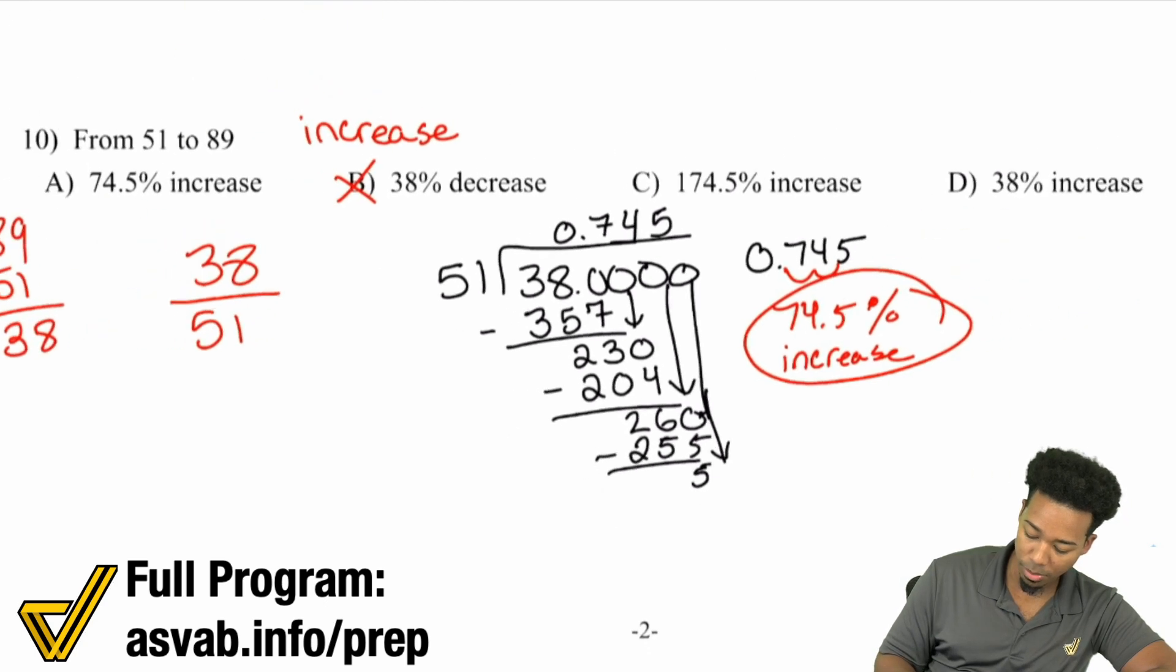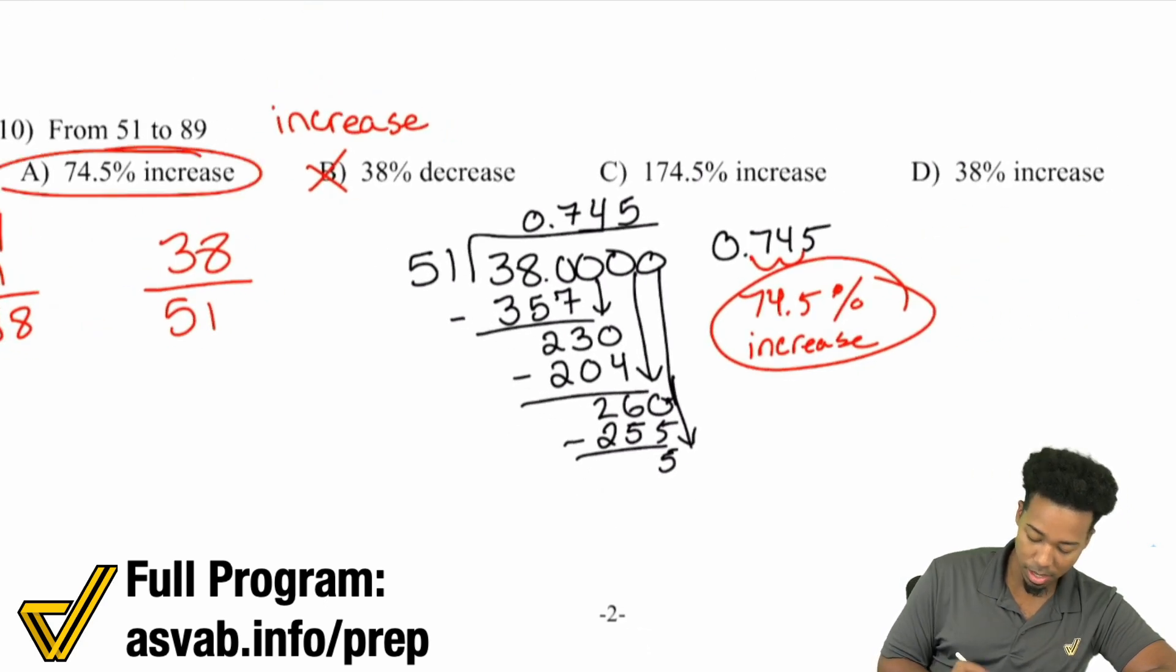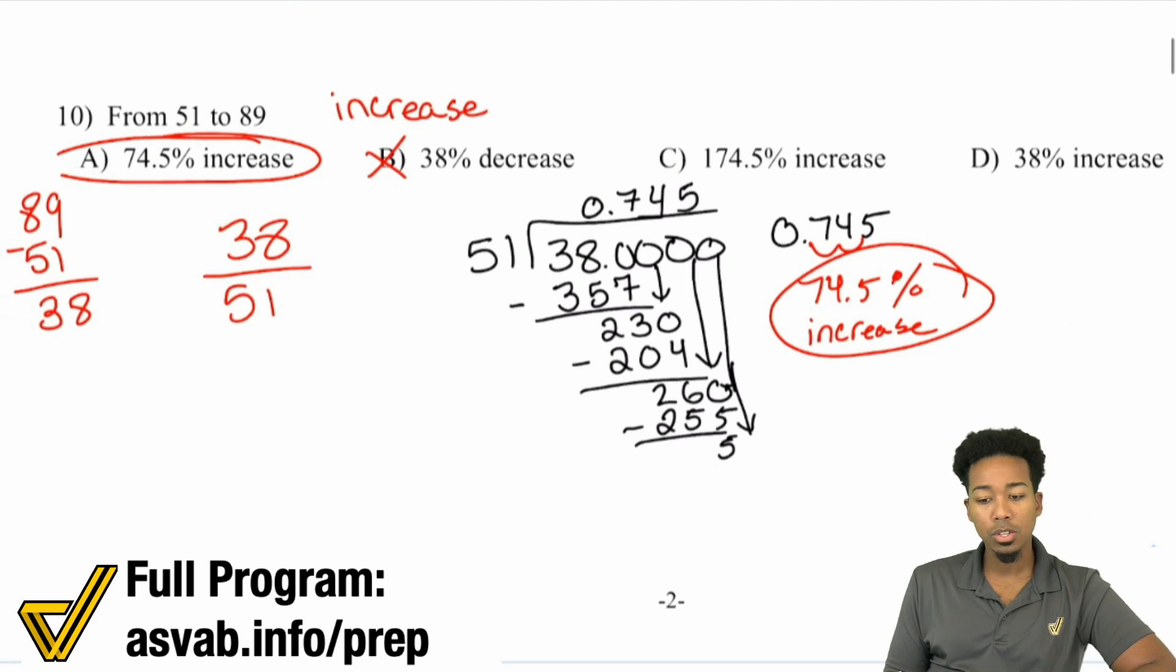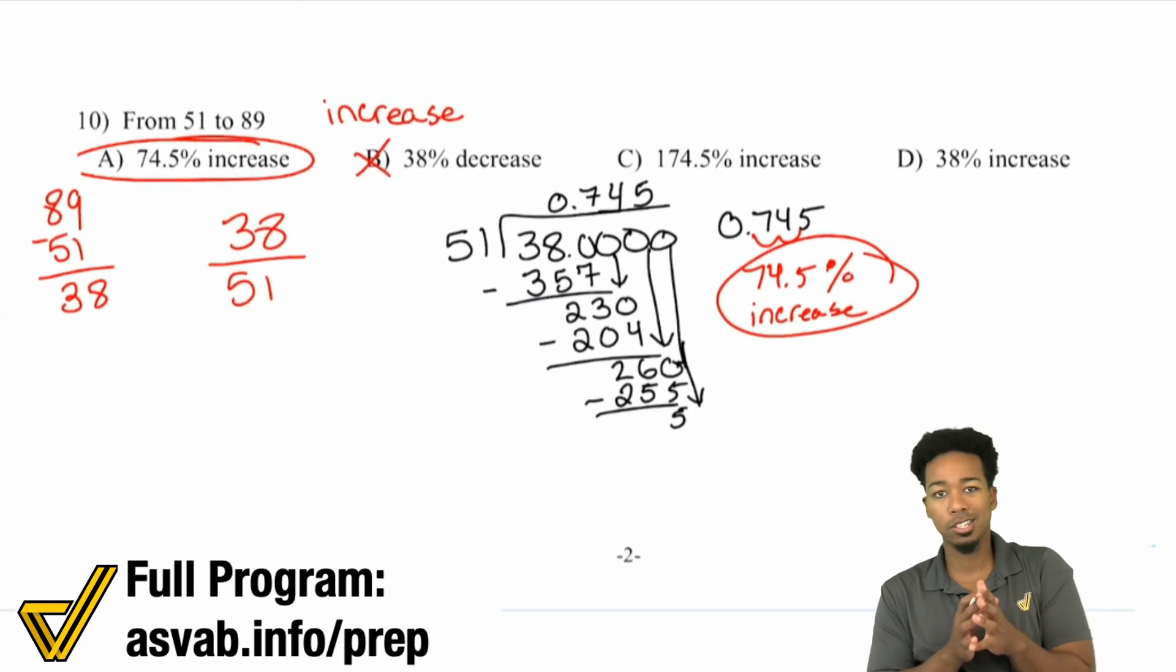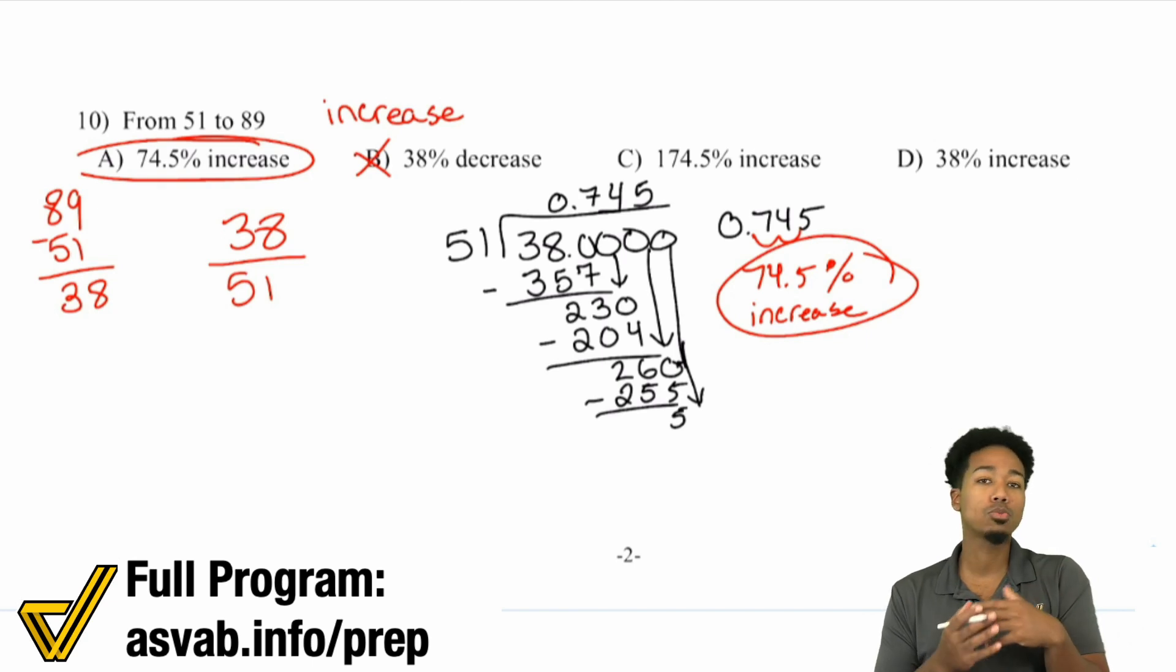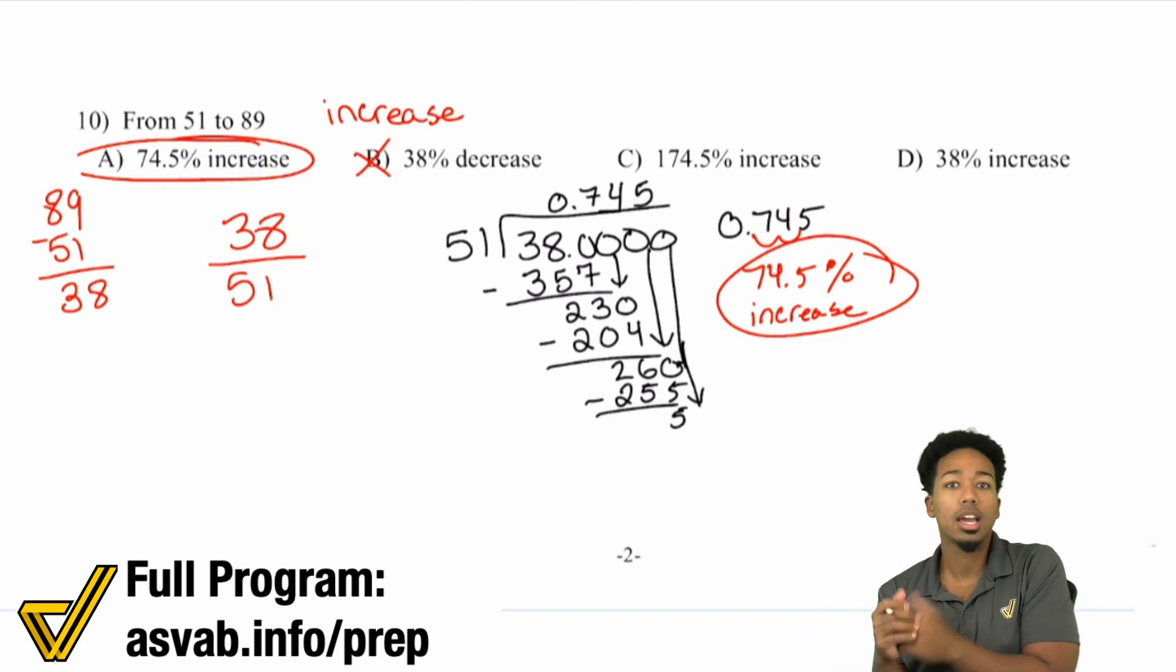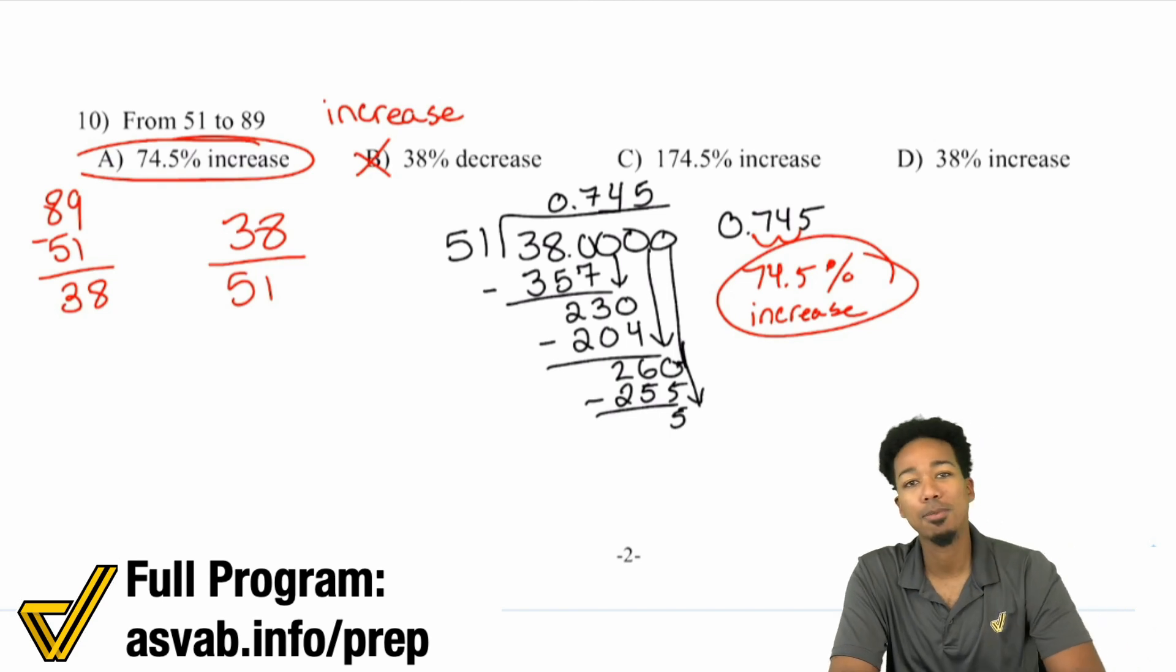To write that as a percent, that's 74.5% as an increase. So a 74.5% increase, that's answer A. You write the percent change by knowing whether it was an increase or decrease, then writing the change as a percent of that original number. You find the percent change by dividing that change by the original number, then turning it into a percent.